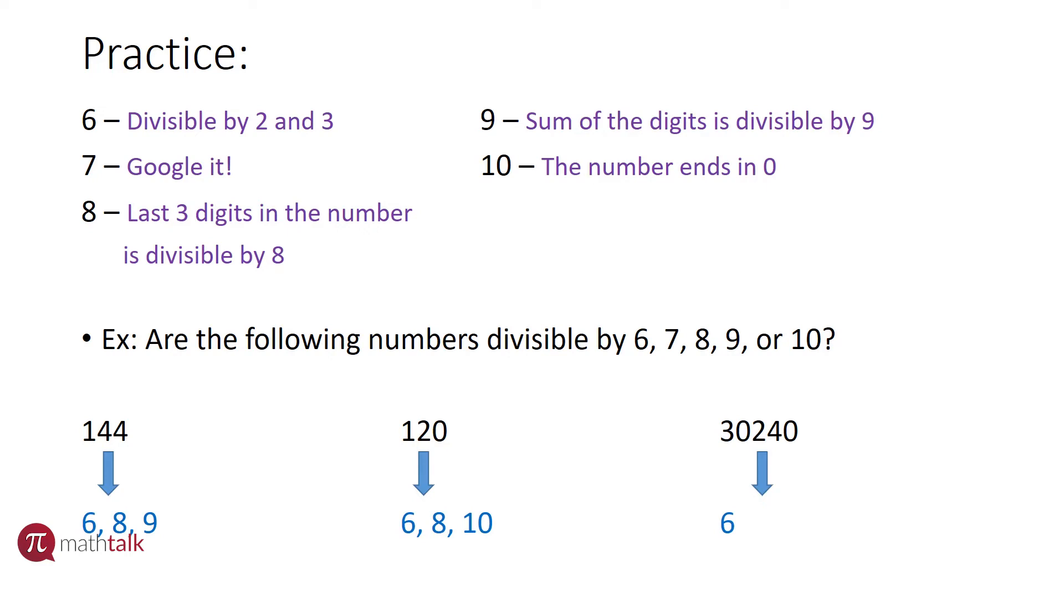All right, fantastic. Seven actually does work in this case. Again, I'm not going to show you the rule, but I'll tell you that seven works. Eight. For eight, I need to look at the last three digits in my number, so I'm looking at 240. If 240 is divisible by eight, then 30,240 is divisible by eight. And so 240—24 is divisible by eight, which means any multiple of 24 is divisible by eight. And since 240 is a multiple of 24, eight has to work.